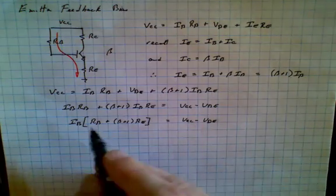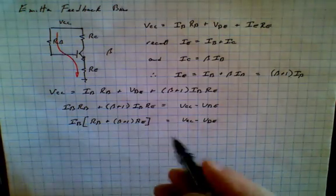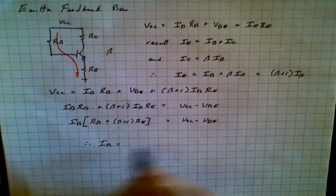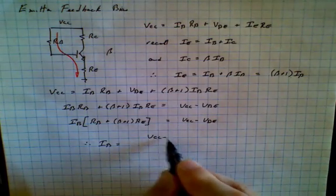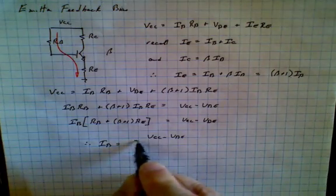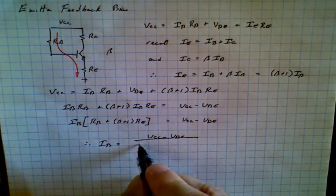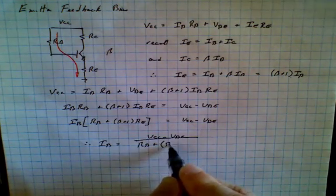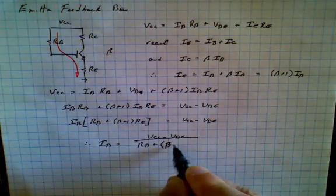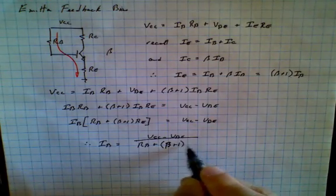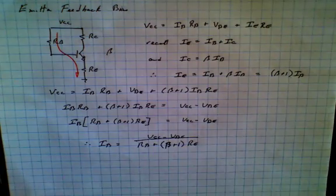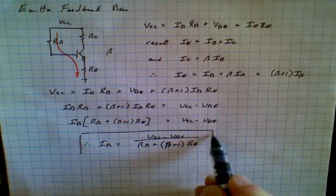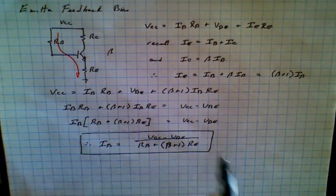And now, of course, we can pull the Ib out of this, divide both sides by this expression. And we say, therefore, Ib is equal to Vcc minus Vbe divided by all of this: Rb plus beta plus 1 times Re. So this is one of the defining equations of emitter feedback bias.